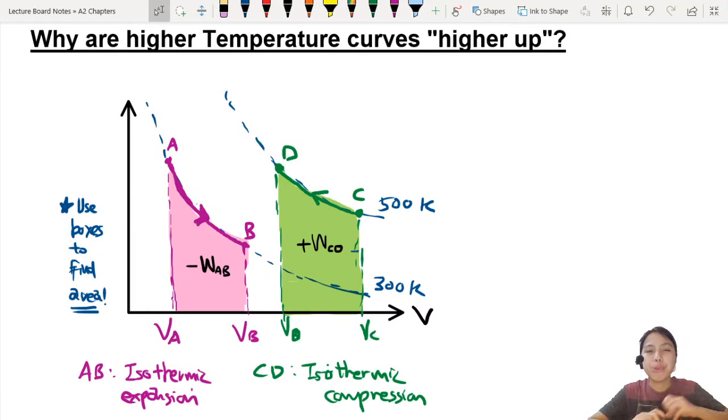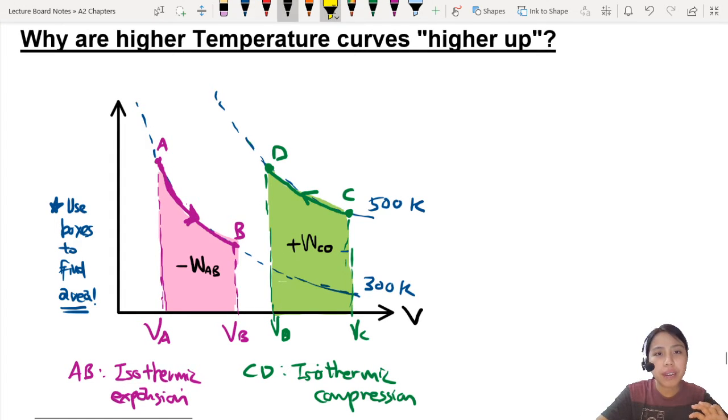Welcome to this math booster where we answer the question, why are the higher temperature curves higher up? So if you look at this PV graph, I think my P is missing, pressure against volume.